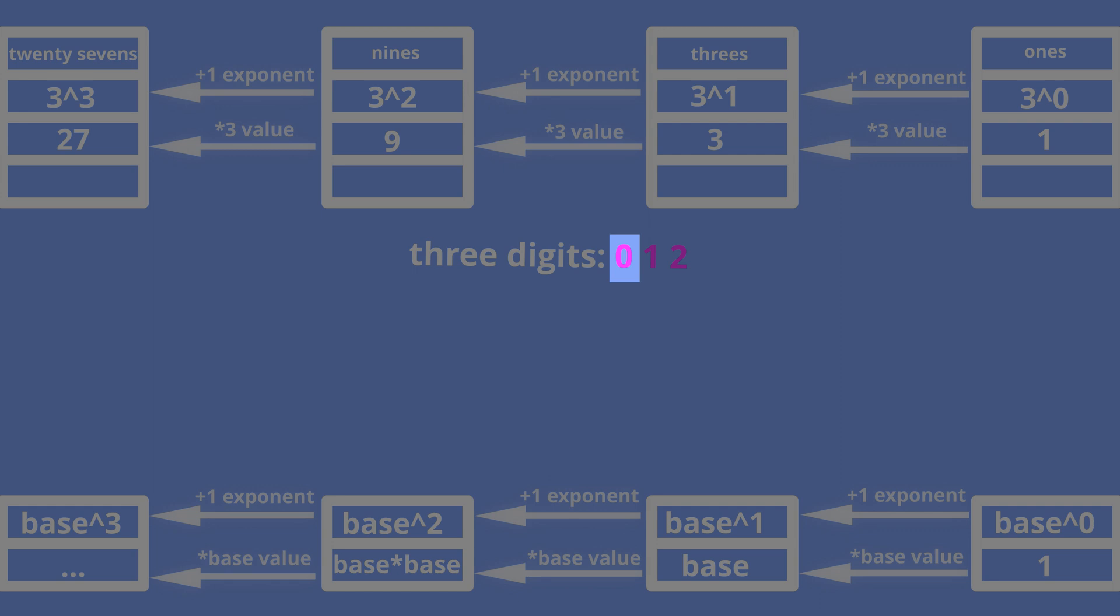Please pay attention that 0 is the first digit, and the last digit equals the base minus 1. So in our case 2 equals 3 minus 1. Please pay attention that the number of digits equals the base. In our case base is 3, and the number of digits is 3.